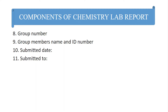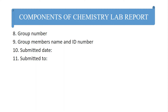Most of the time a laboratory experiment is done in a group. Write the group number assigned to you by your instructor — Group 1, Group 2, Group 3, and so on. The next item is group members: write each group member's name and their corresponding ID number.